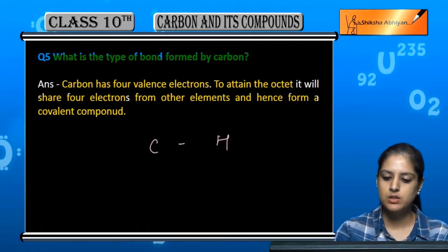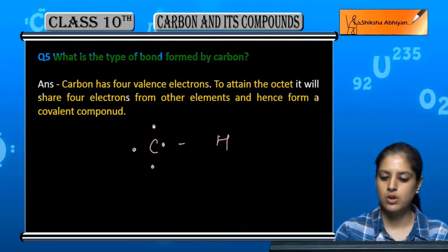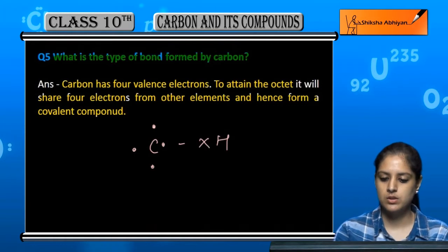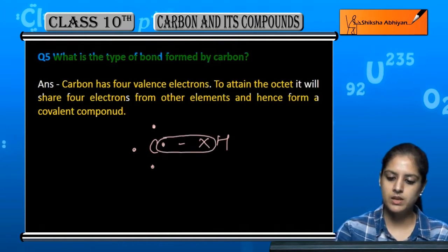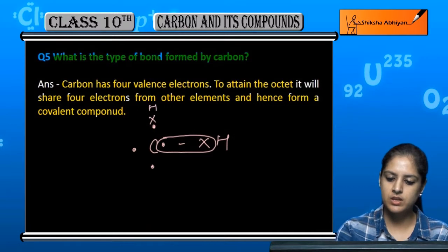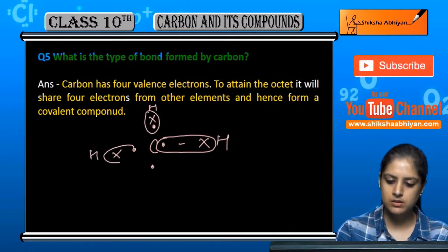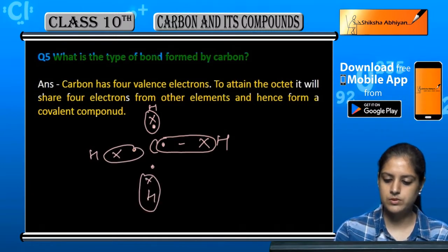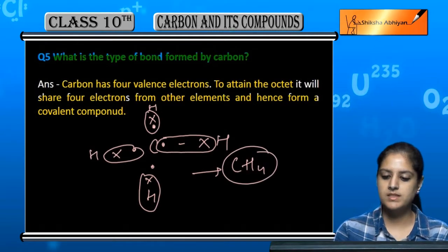C has 4 outermost electrons and H has 1. H will share here, and share here, and here, and here. So this is a CH4 molecule.